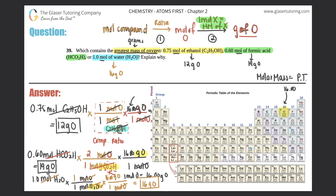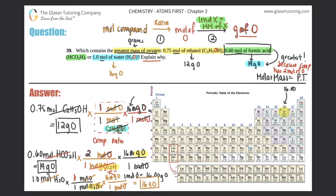Which one contains the greatest mass of oxygen? Obviously the one with the largest number — that's the 19 grams of oxygen. So 0.60 moles of formic acid has the greatest mass of oxygen. Why? Because formic acid is the only compound that had two moles of oxygen. The other ones — H2O and ethanol — each had only one mole of oxygen in their compound.